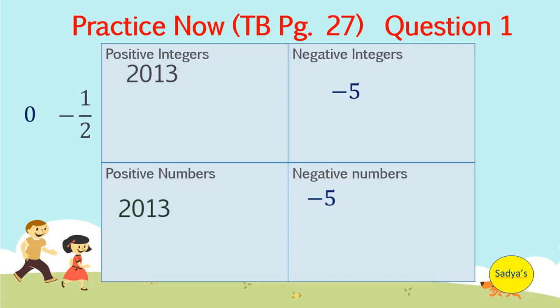Negative 1 by 2. Negative sign indicates that the number is negative and since it is a fraction it won't be an integer. So negative 1 by 2 is a negative number but not a negative integer.